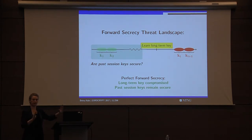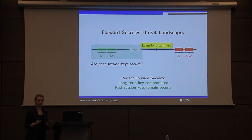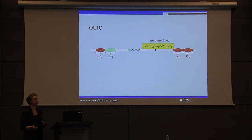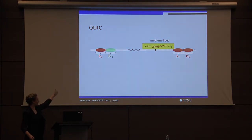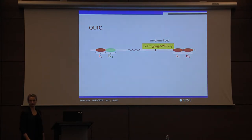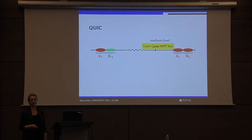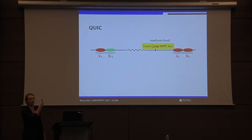If all the communication that's happened in the past is still okay even after compromise, then we're happy. In terms of QUIC, this becomes problematic. We're not talking about a long-term key — actually a medium-lived key, part of the server configuration file. However, if we compromise it, then our zero RTT data key and all the associated data can now be read. The eventual session key is still okay, but all zero RTT sessions that the client had made to the server are compromised.